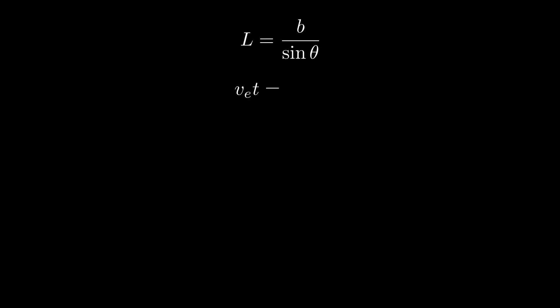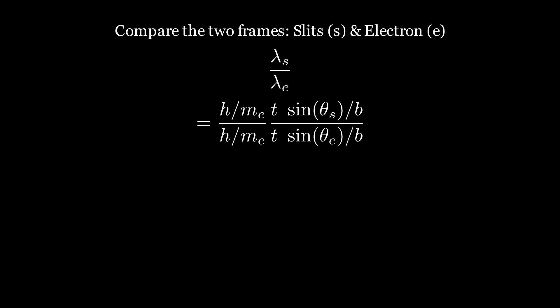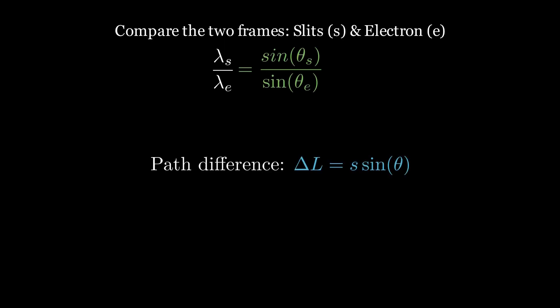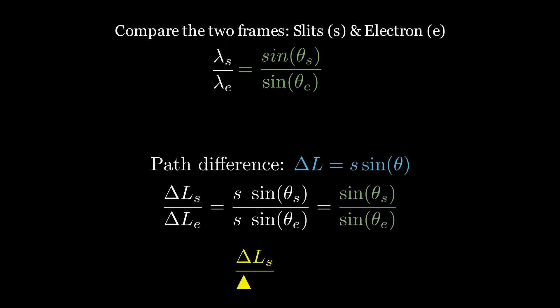With a simple calculation, we can compare the difference between delta l and the difference in wavelength of the electron between the frames of reference. We find that the ratios are equal, and hence, in the non-relativistic case, the interference pattern remains the same for the frames of reference.